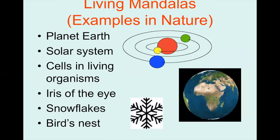Here are some examples of living mandalas. The solar system is a great example because you have a center — the sun — and then outer circumferences, which are our planets and their orbits. Another example would be a snowflake, because you have a center point and then everything that radiates from it.